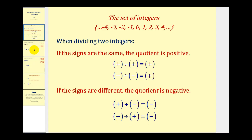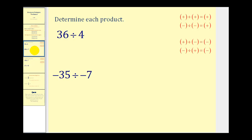Let's try some. Now this first one we should already know. Positive thirty-six divided by a positive four is equal to positive nine. And it does fit the rule of a positive divided by a positive is always positive. The second example we have a negative thirty-five divided by a negative seven. Well a negative divided by a negative is positive. So this will be positive five.